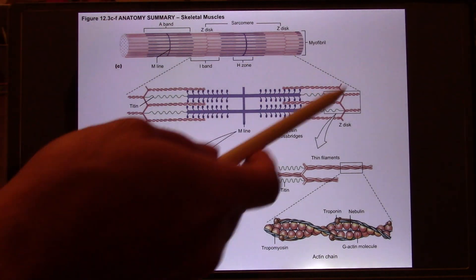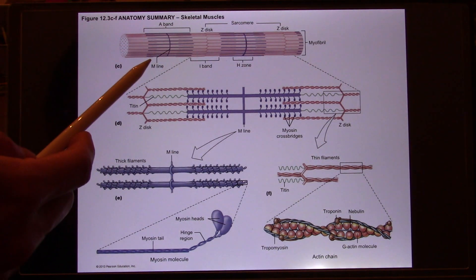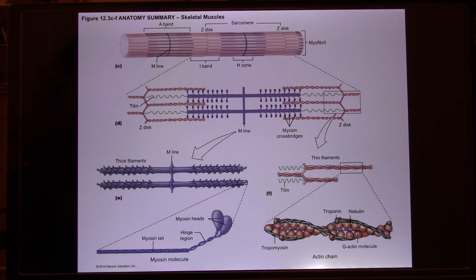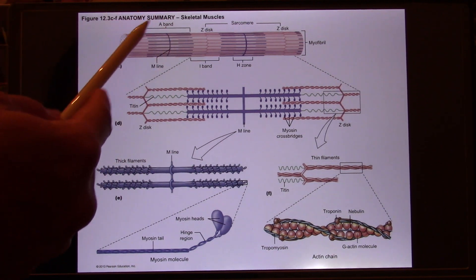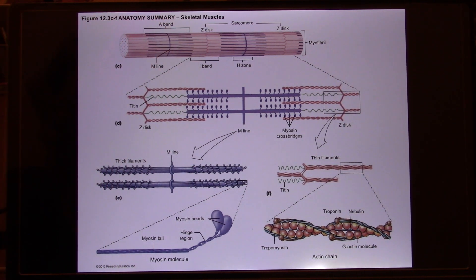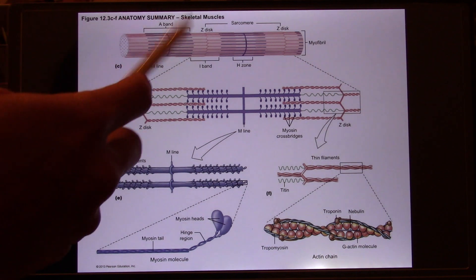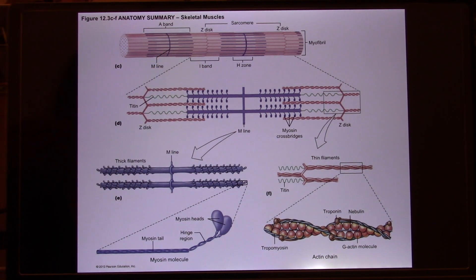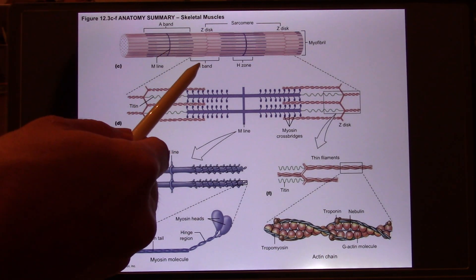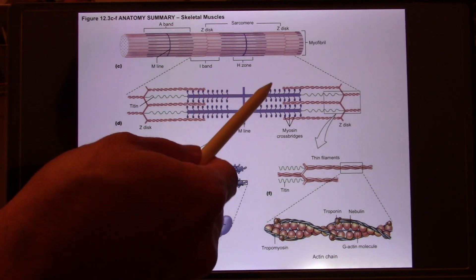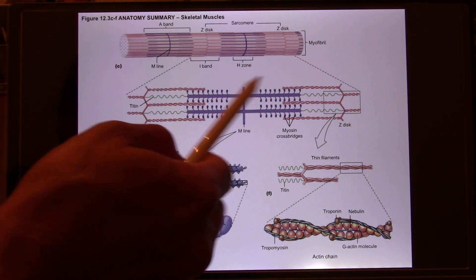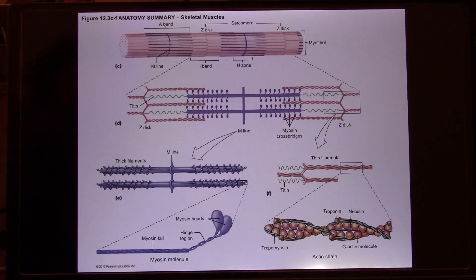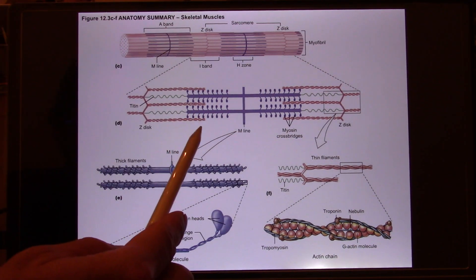At the molecular level, the sarcomere has the thick filament and the thin filament. From anatomy, you learned this is the A-band — the ones that look dark under the microscope — and this one is called the I-band. When muscle contraction happens, the I-band becomes shorter because of the overlapping model. The thin filaments come closer together so the I-band becomes shorter. That's how contraction happens.